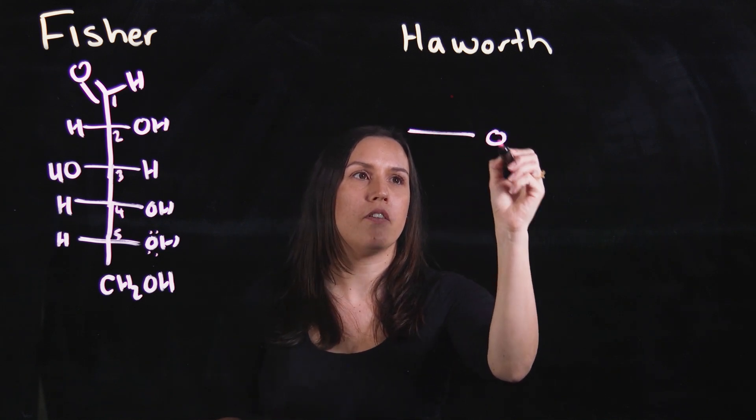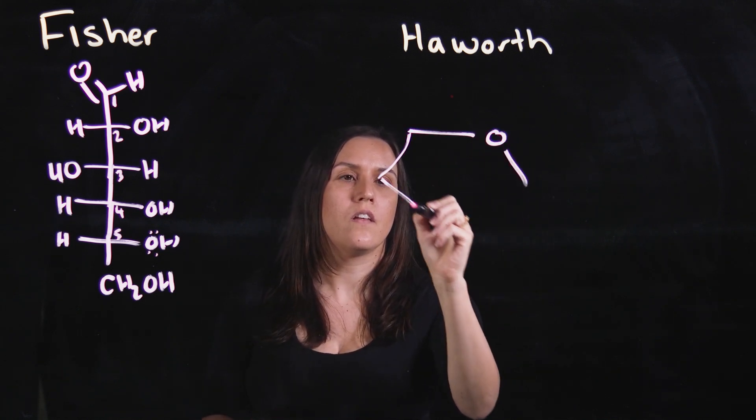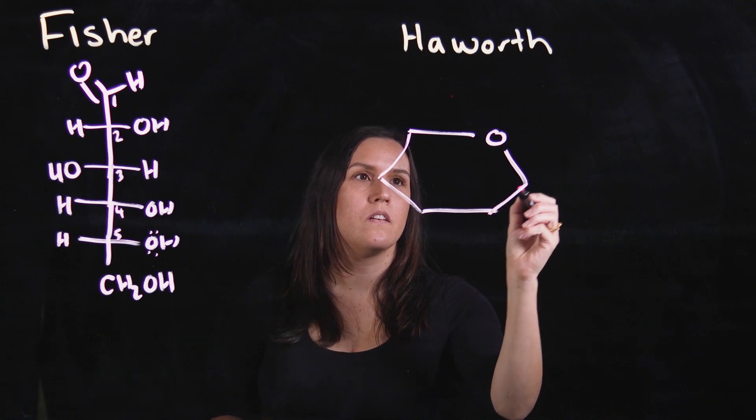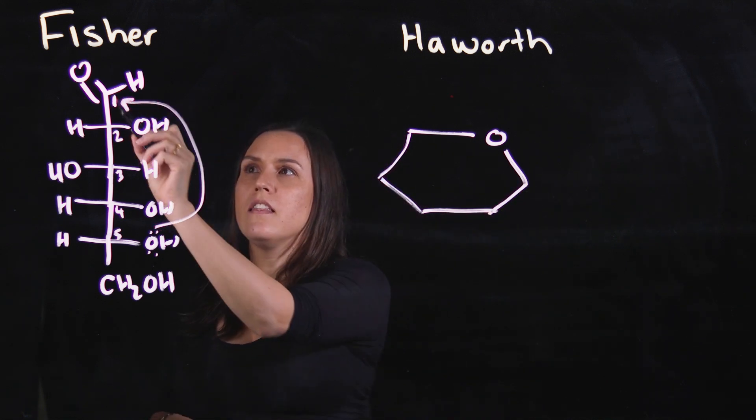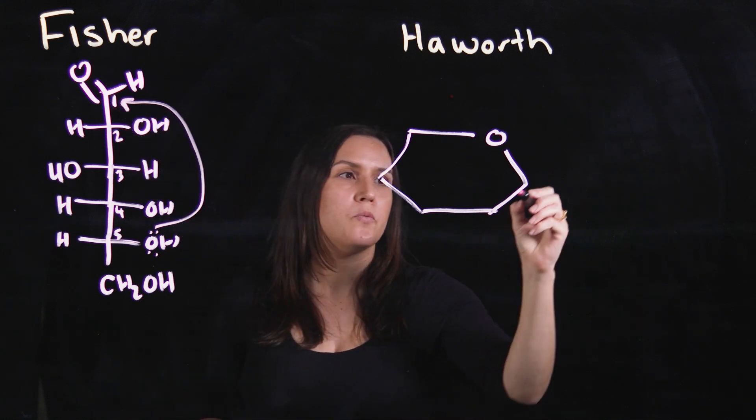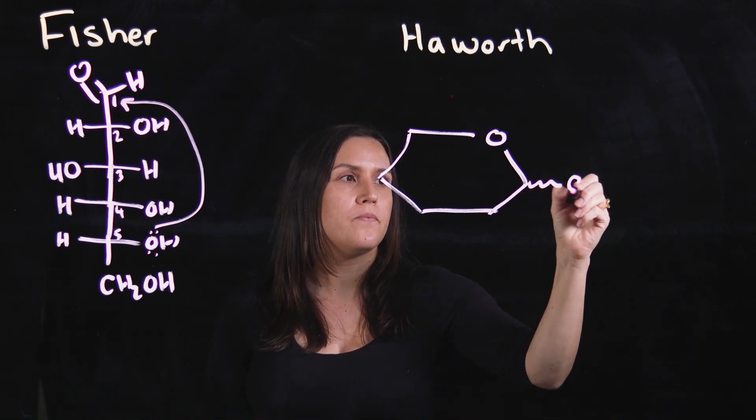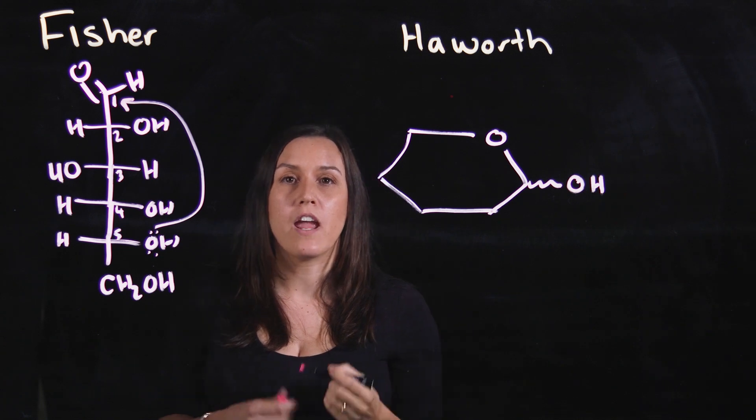So drawing that out in the Haworth. When we have this one cyclizing in, this carbon, the anomeric carbon, will become a racemic mixture. We've got our alpha and beta.